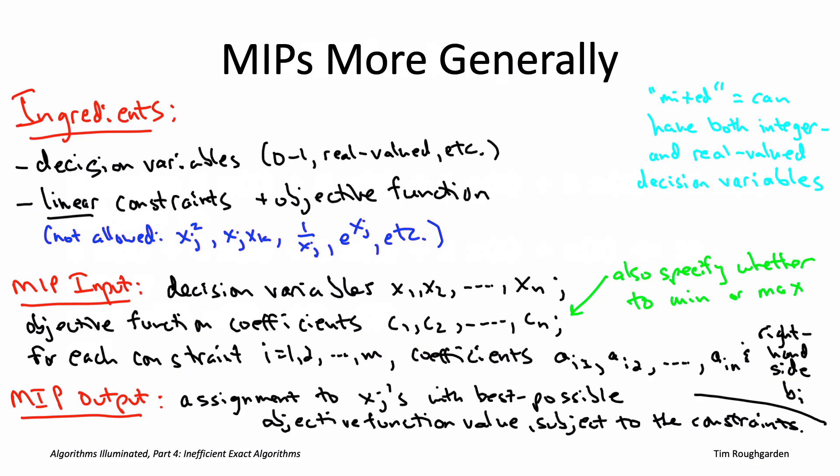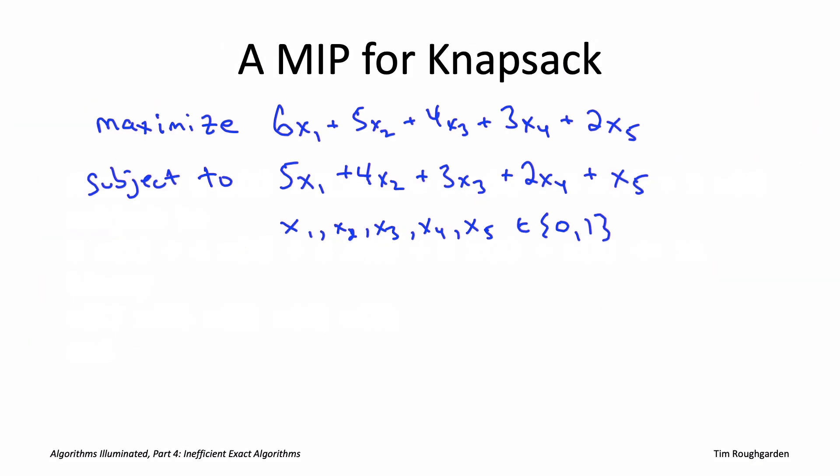So even with this linearity restriction in both the constraints and the objective function, it can be embarrassingly easy to express NP-hard optimization problems as mixed integer programs. We already saw an example of that when we talked about knapsack and wrote this very simple integer program.